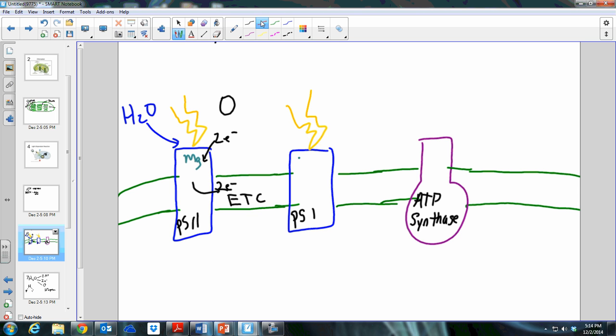Oxygen is at this point given off as a waste product. Oxygen, as you know, plants exhale oxygen, we inhale oxygen, so this is how the oxygen of the world comes to be. We depend on plants in order to get our oxygen.